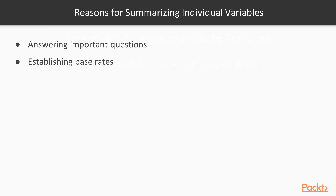A second reason why you want to summarize individual variables is to establish base rates. For example, let's say 70% of our customers are satisfied with our product. If we then add a new feature and reassess, and now 80% are satisfied, we can see there was a 10% increase in that satisfaction rate. Knowing the base rate is important before you make additional changes and see how those changes affect your situation.